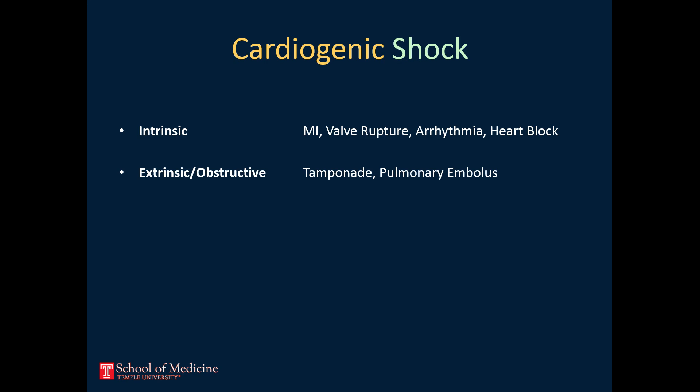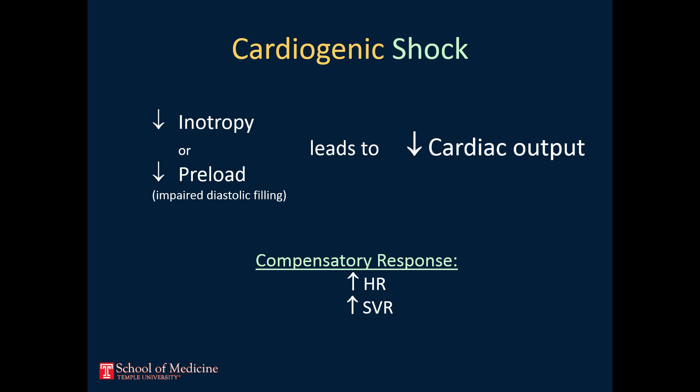The final category of shock that we will discuss is cardiogenic shock. This is sometimes discussed as a pump failure. The reason may be intrinsic, meaning a problem within the heart itself, or extrinsic, such as fluid pressing on the heart and keeping it from filling. Either way, the primary physiologic problem here is a drop in cardiac output. The body may attempt to compensate by increasing heart rate and systemic vascular resistance.